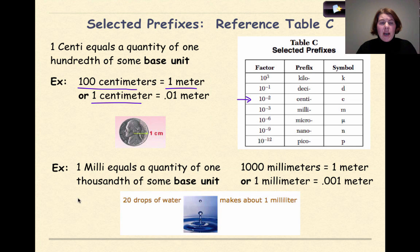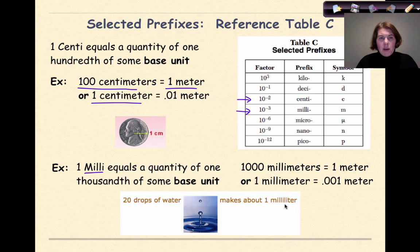Another prefix that we commonly use is milli. And if we look at milli, it's ten to the negative three, or a thousandth of something, which is also represented as a little m. So one milli equals a quantity of one thousandth of some base unit. A thousand millimeters is equal to one meter, or one millimeter is equal to one thousandth of a meter. An example that we might see in chemistry is twenty drops of water makes about one milliliter.